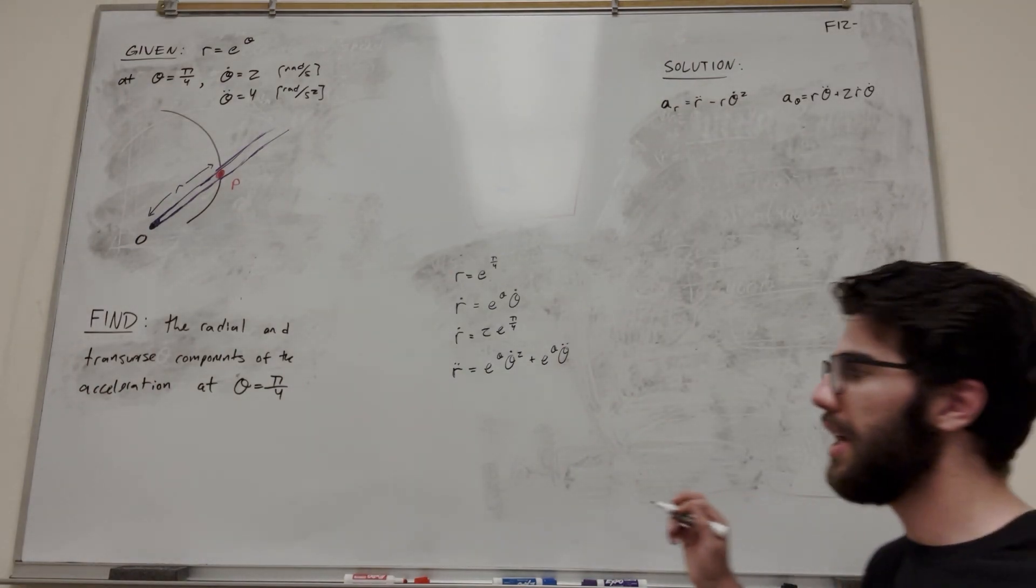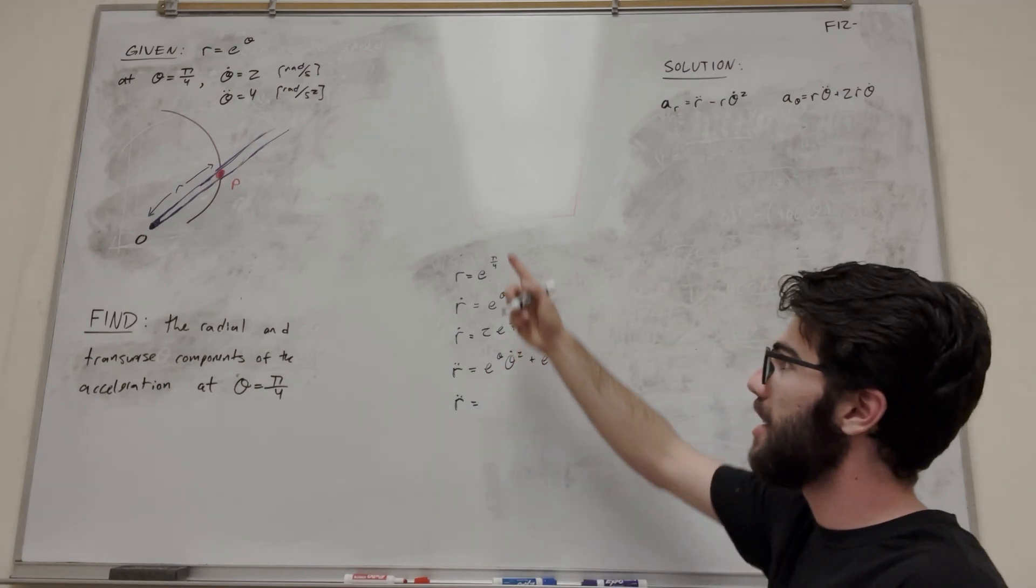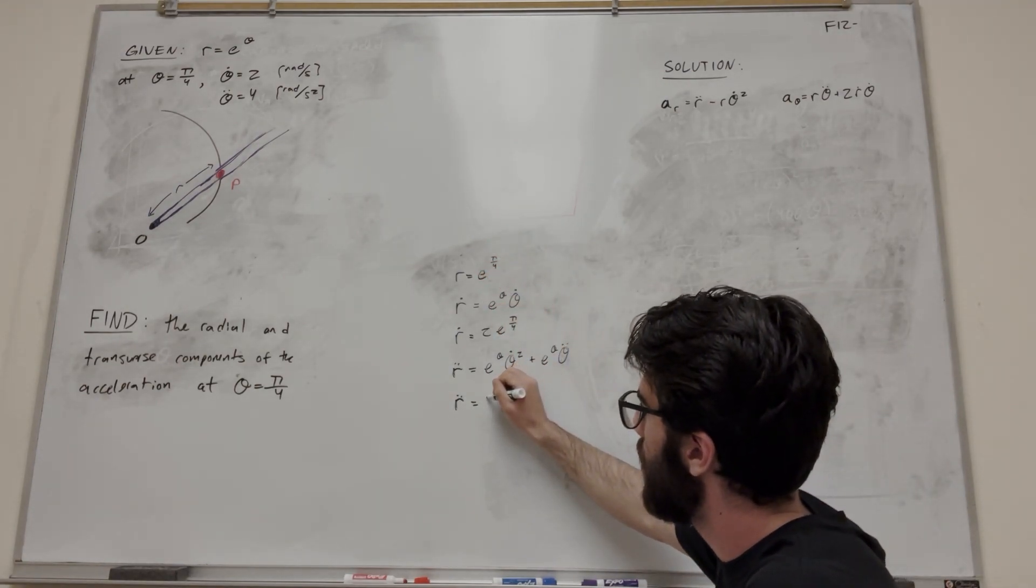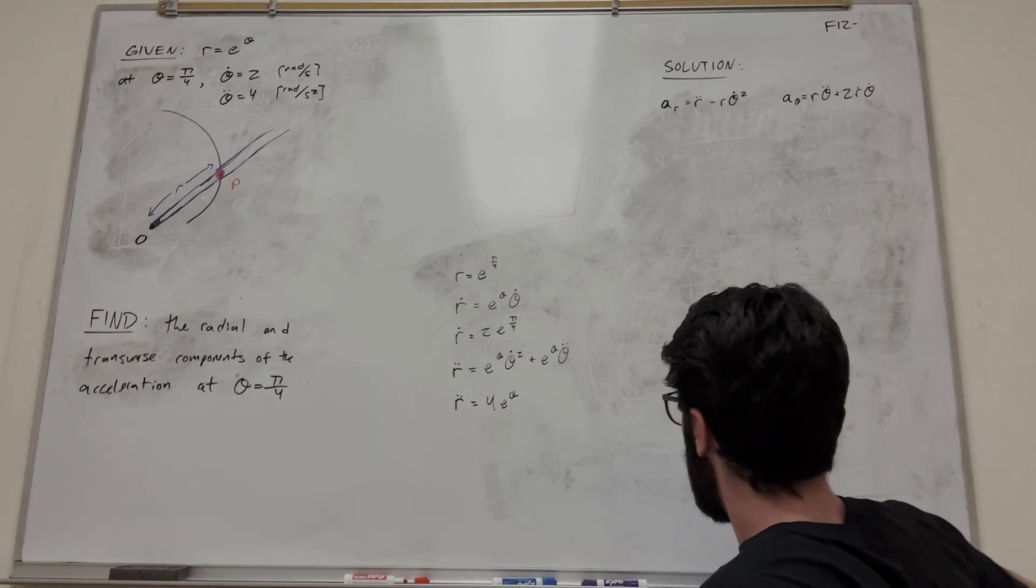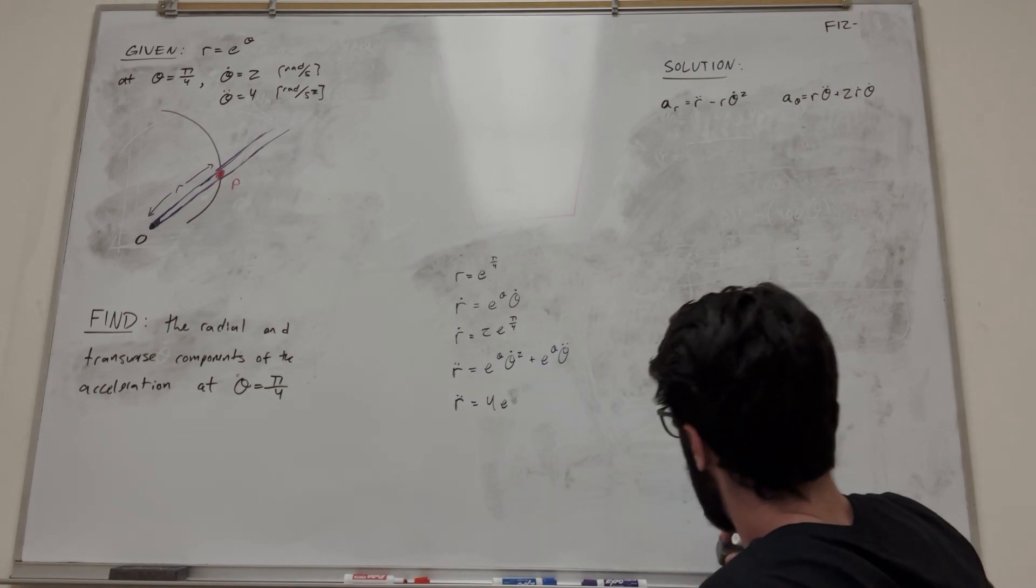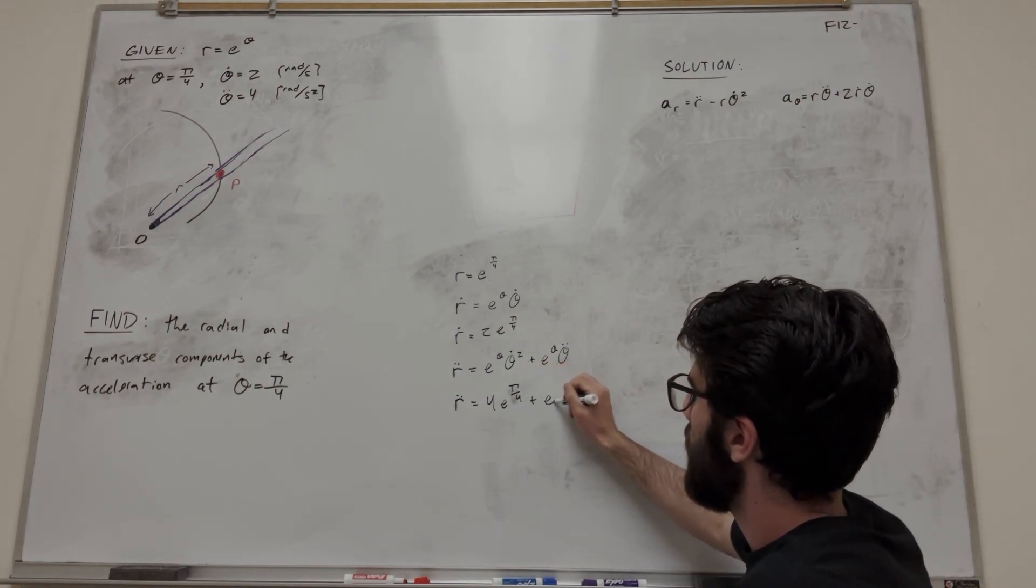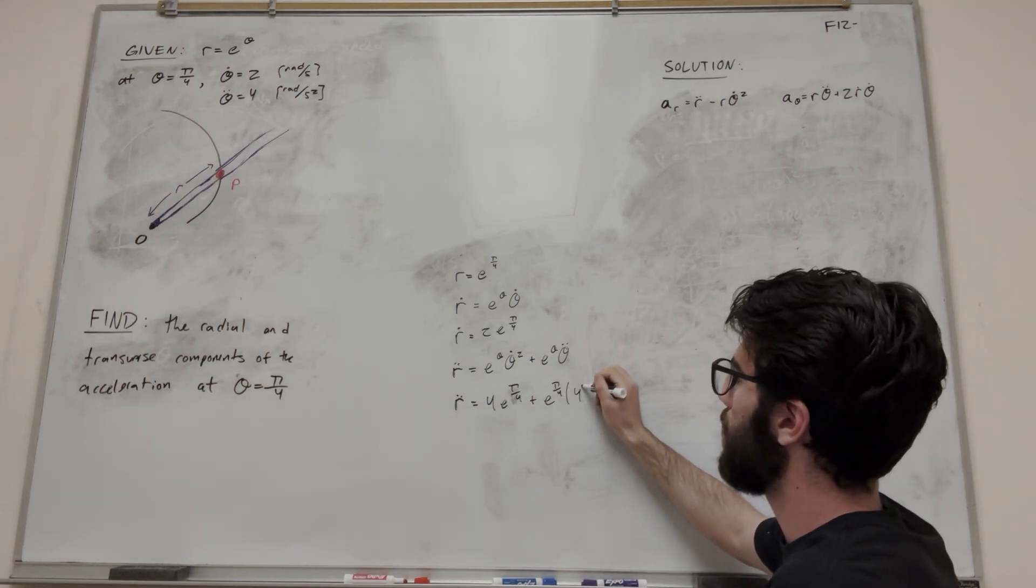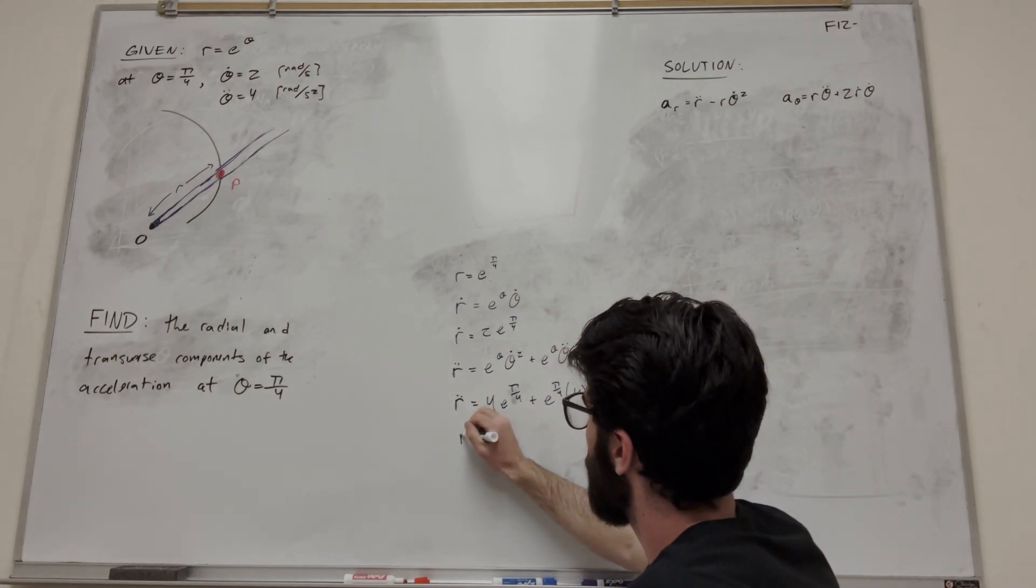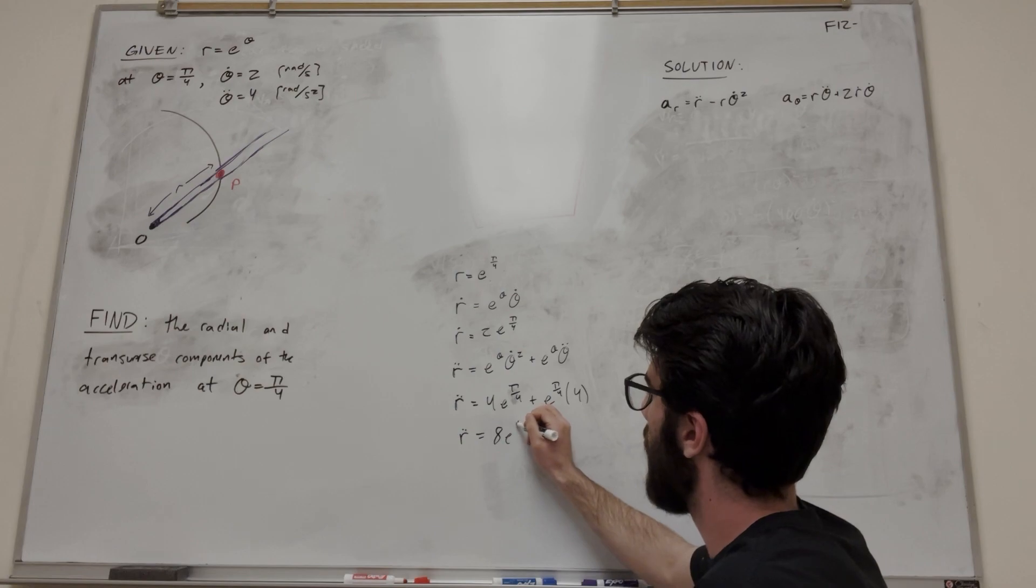All right, so let's plug in what we know again. So r double dot is equal to...theta dot is equal to 2, so squared is 4. So it's going to be 4 e to the theta. But we know theta is pi over 4. So pi over 4 plus e to the pi over 4. And then this theta double dot is equal to 4 because we know that up there. So we can simplify this down to 8 e to the pi over 4.